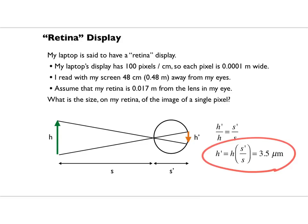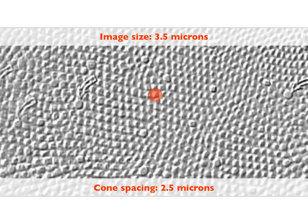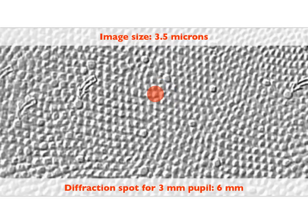Doing that calculation gives H prime equal to 3.5 microns. Here's why it's called a retina display: individual rod and cone cells in my retina are about 2.5 microns in size. So if the image of a pixel is 3.5 microns — just barely bigger than a cone cell — and when looking at a point object the diffraction spot from my circular pupil is about 6 microns, the diffraction spot is bigger than the image size of 3.5 microns. There is no point making a laptop screen with pixels packed more densely because my eyes aren't good enough to resolve them. The limitation on my laptop screen's crispness is not the screen — it's my eyeballs. The fault is not in our stars; it is in us. It's a retina screen: as good as it needs to be.